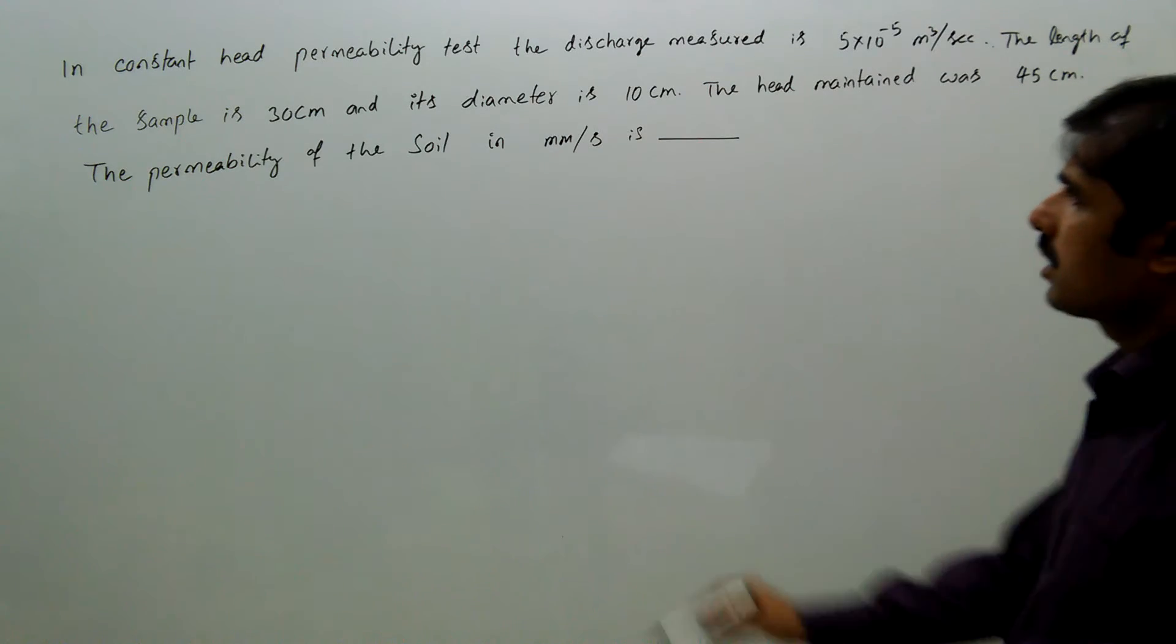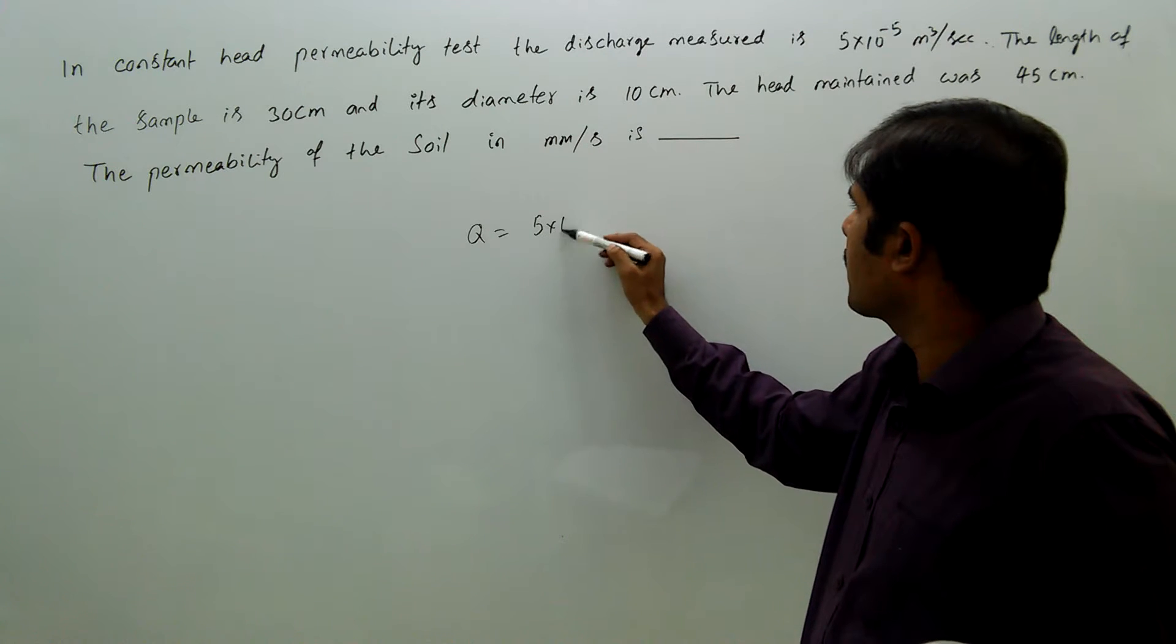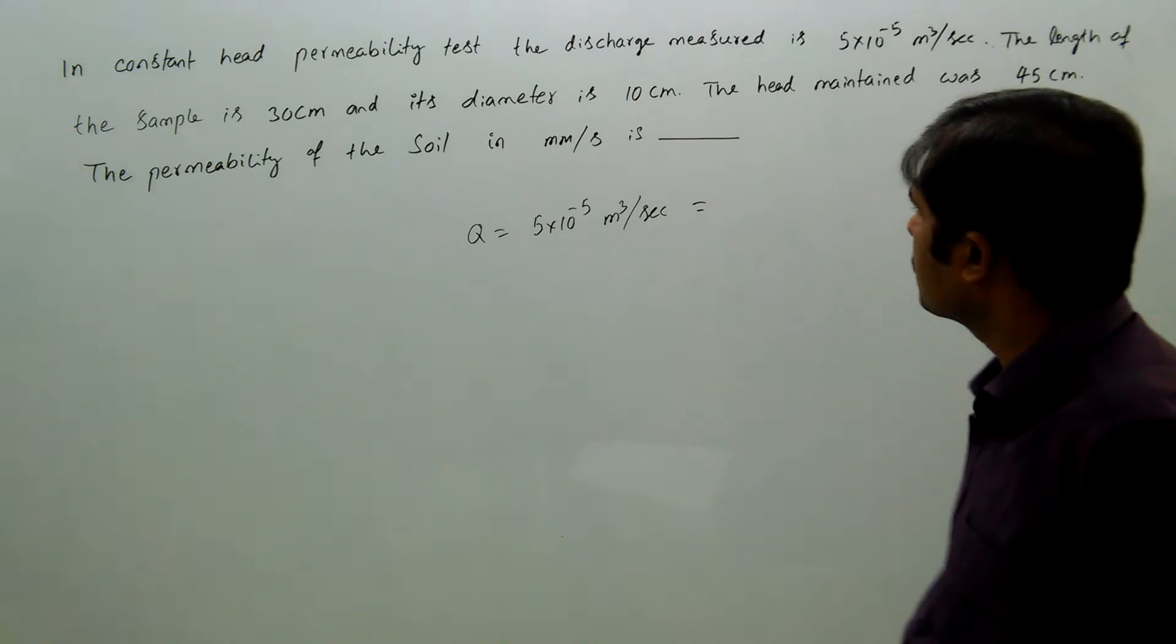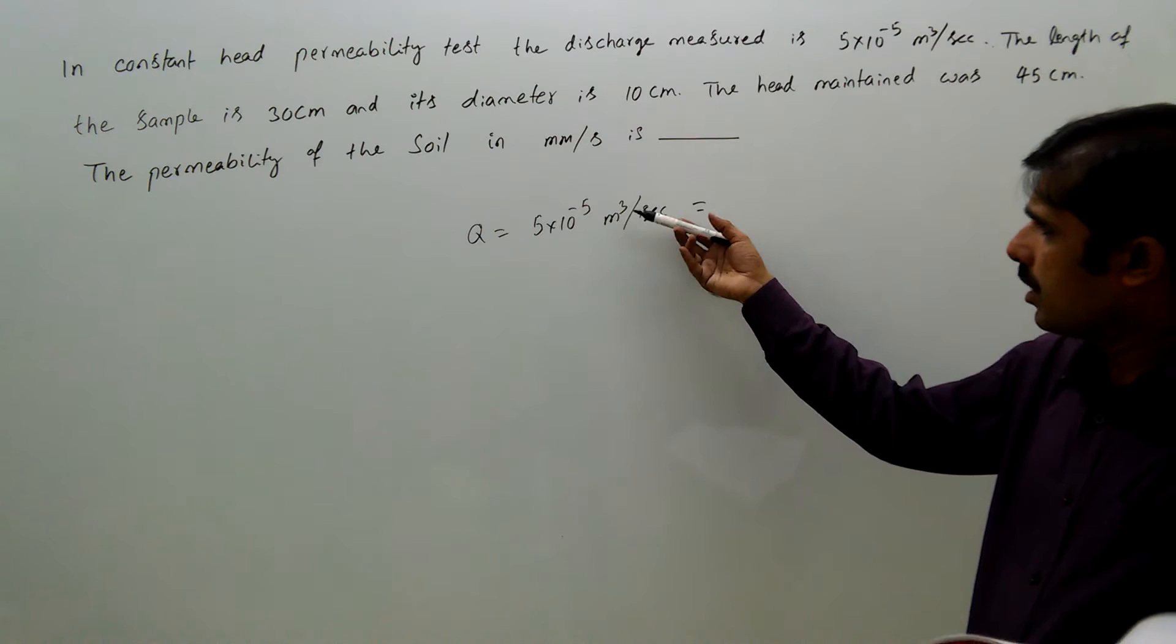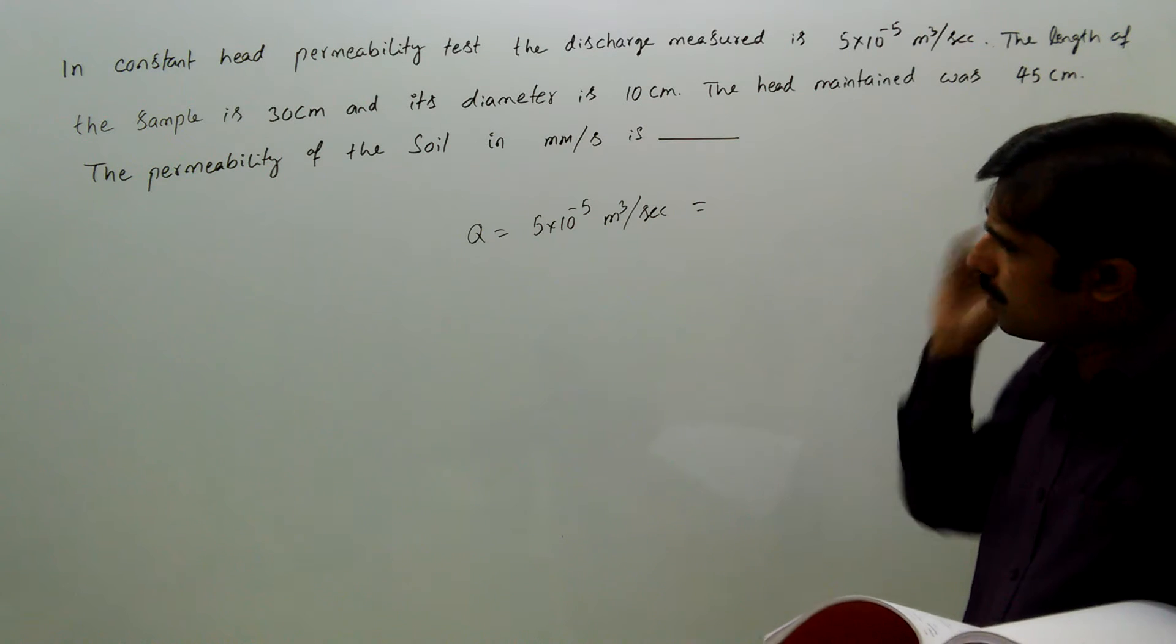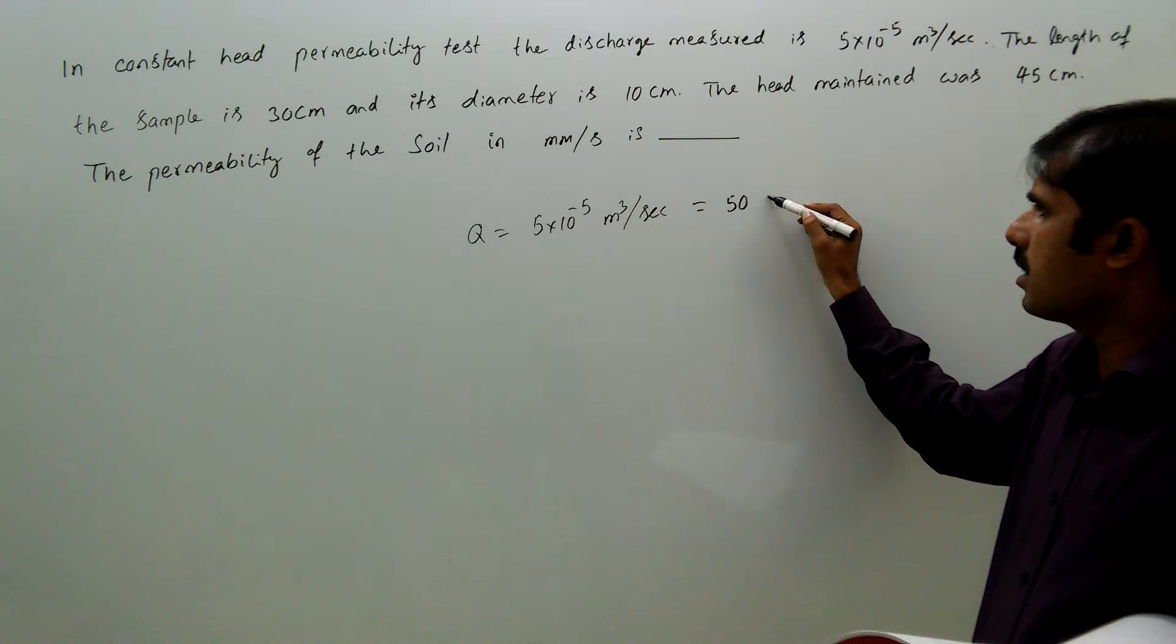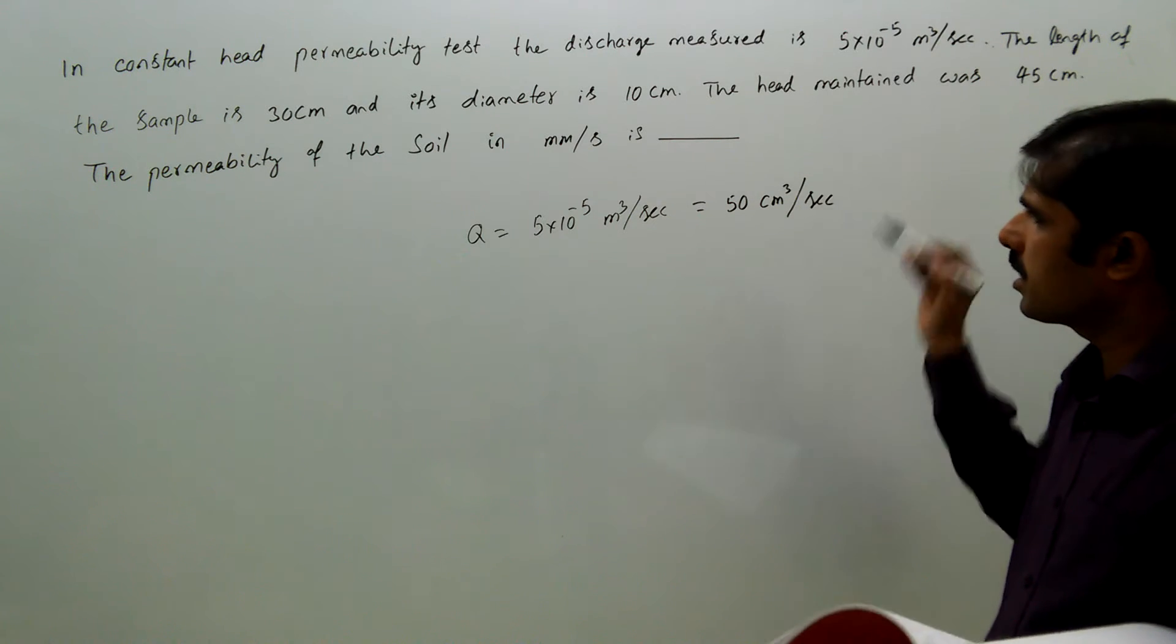So the given data is discharge Q = 5×10⁻⁵ m³/s. To convert it into cm³/s: 1 m³ = 10⁶ cm³, so Q = 50 cm³/s.